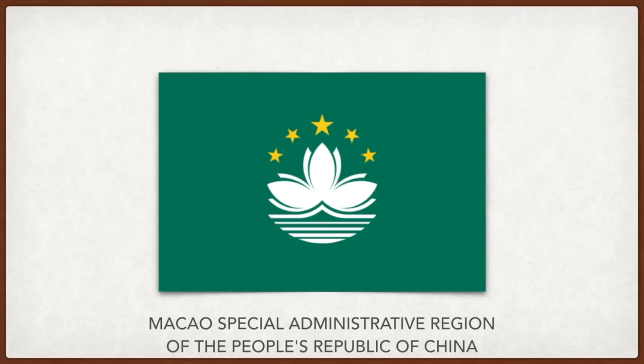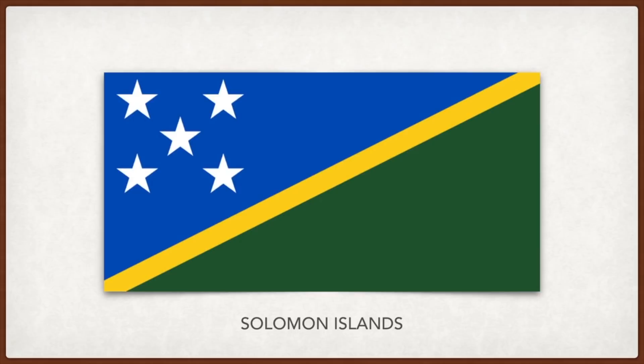Solomon Islands: the green stands for the trees and crops, the blue for the importance of water for the islands, the diagonal yellow stripe for the sun, and the five white stars for the original five provinces into which the country was divided.